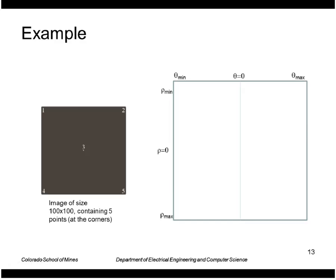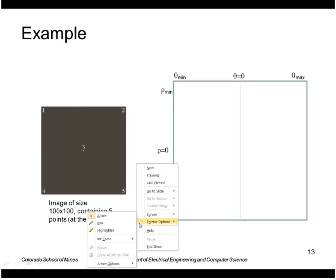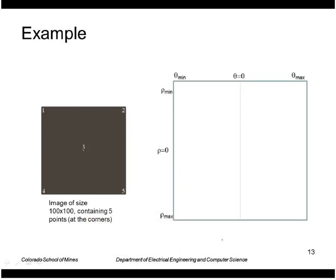Let's look at this example of an image size 100 by 100 containing points in the corners and also a point in the middle. Here's our parameter array. It goes from minus 90 degrees to plus 89, and the maximum value of rho would be 100 times square root of 2 because it's the diagonal, so it would be 144. I'll just use minus 144 for the minimum even though I don't think it will go that far.